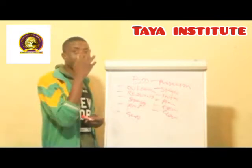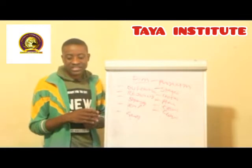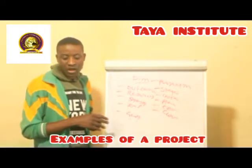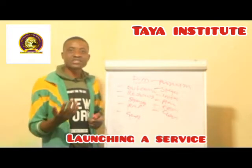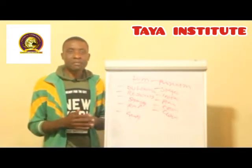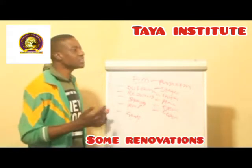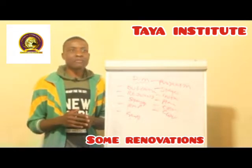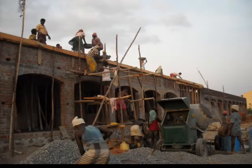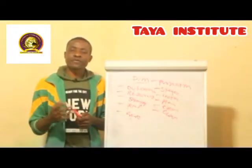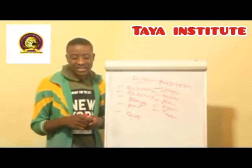Project management is the science and the act of organizing all the components of a project. For example, the launching of a new service could be a project. Building a school could be a project. Constructing a road could be a project. Working on some renovations could be a project. Remember, every project has a start and every project also has an end.